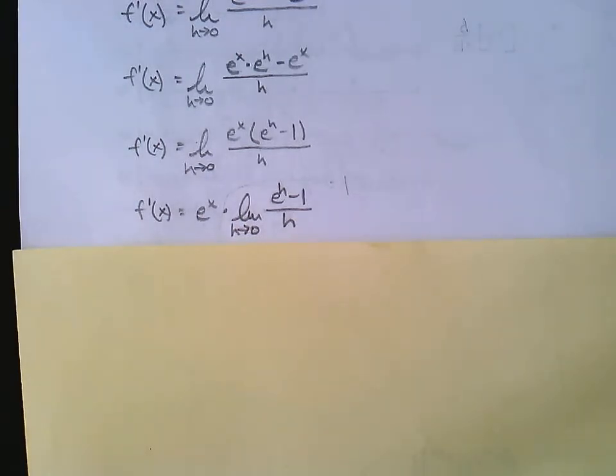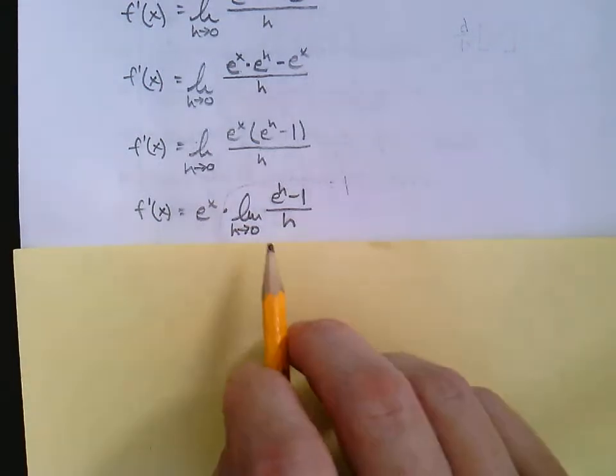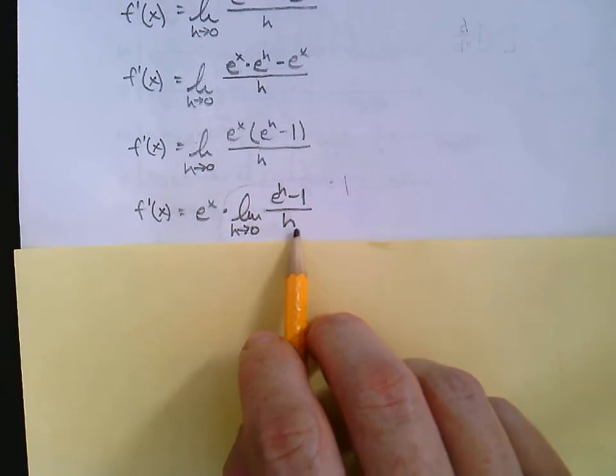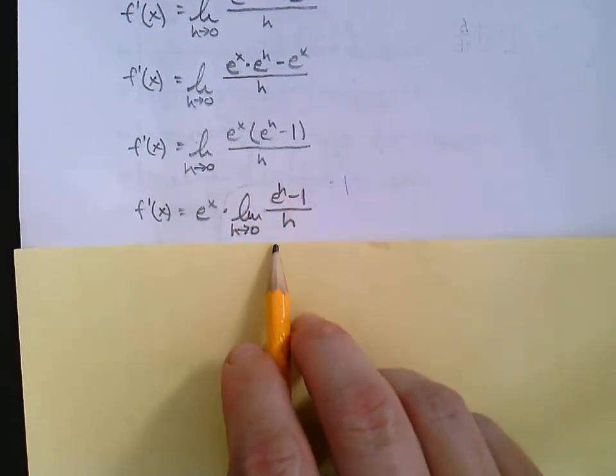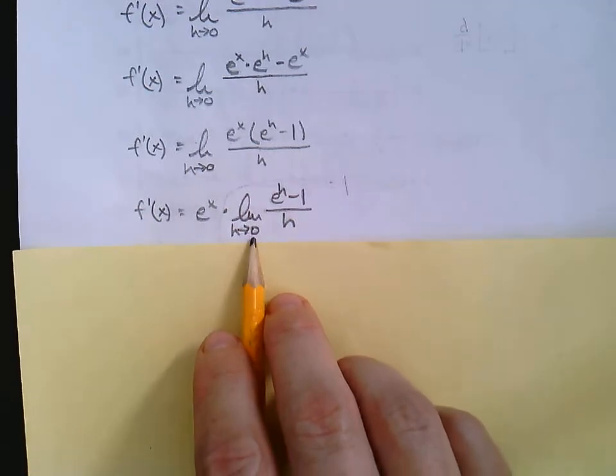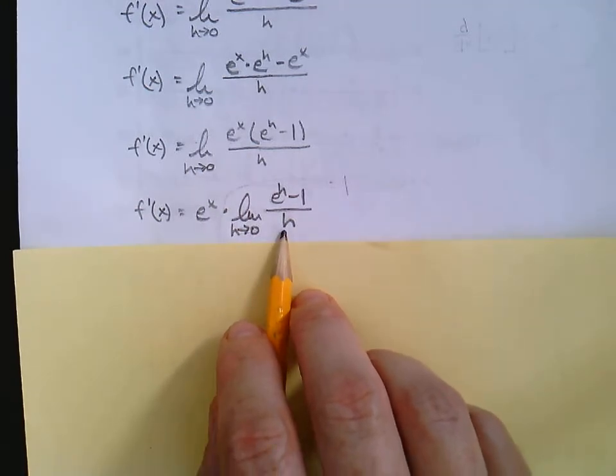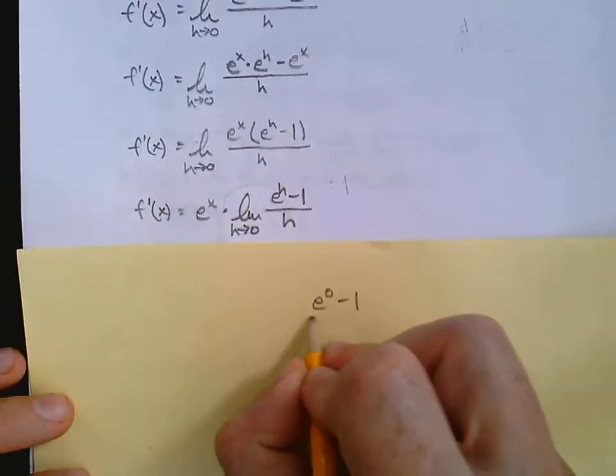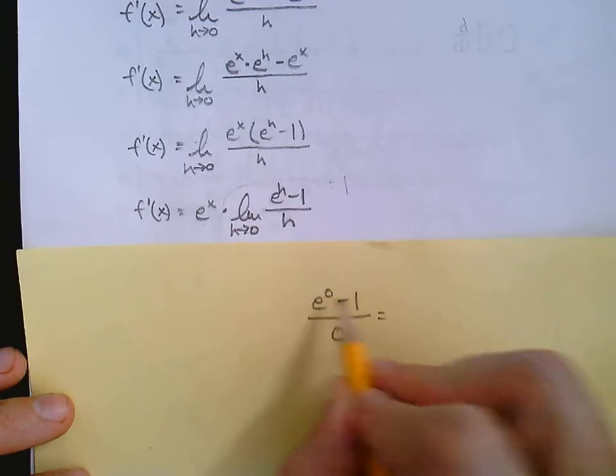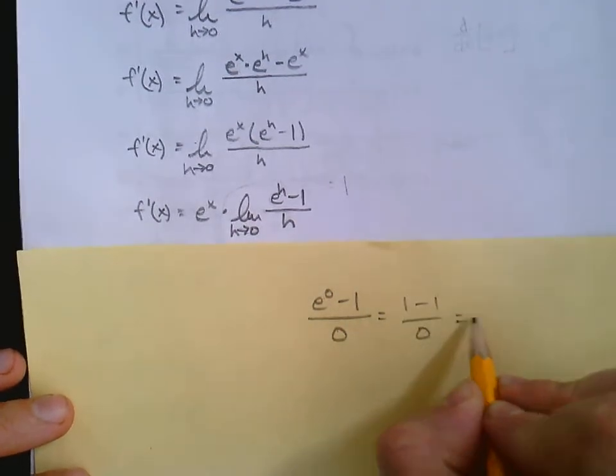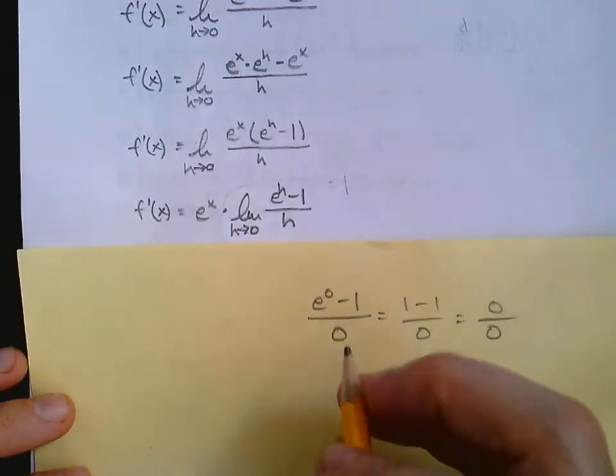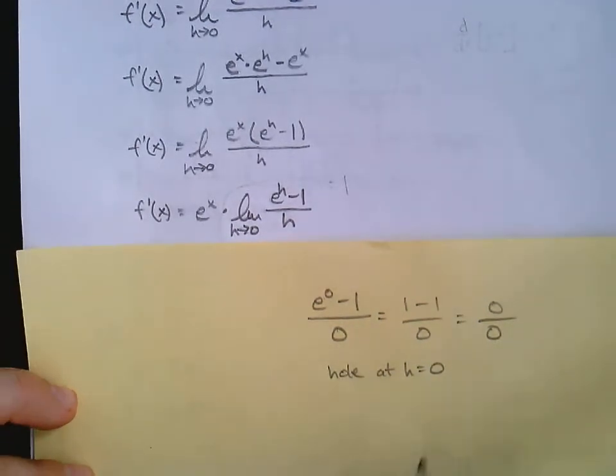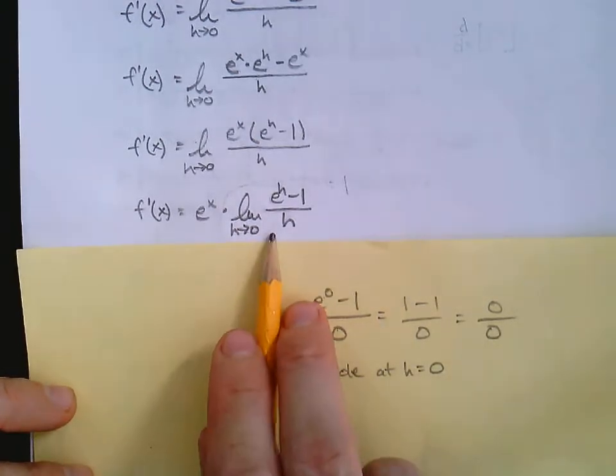So what do you do with the limit as h approaches 0, e to the h minus 1, all over h? Now, you could approach this multiple ways. We notice that if we were to attempt to plug in 0 for both h's, we'd have e to the 0 minus 1 over 0. But e to the 0 is 1, and so that would come out to be 0 over 0. There is a hole at h equals 0. So there is an answer to this. It's not undefined.